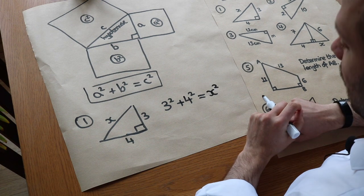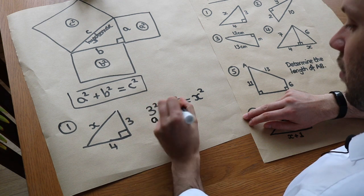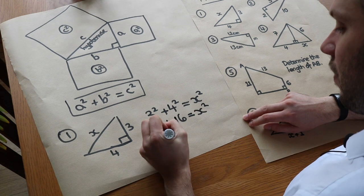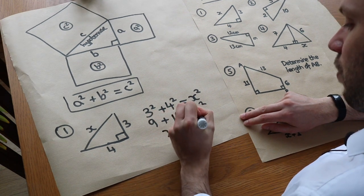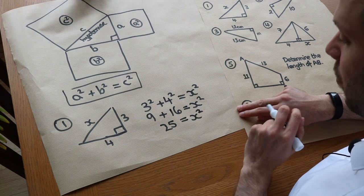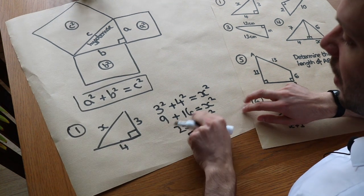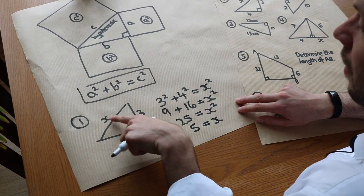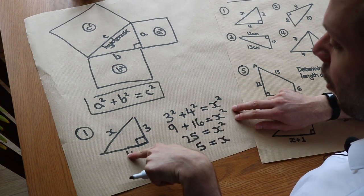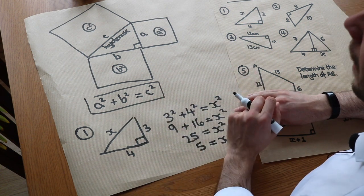Simplifying: 3² is 9, 4² is 16, and 9 + 16 = 25. So x² = 25. To solve for x, we square root both sides: x = 5. As an extra fact, when all three sides are whole numbers, that's known as a Pythagorean triple — 3, 4, 5 is a classic example, and there are many others.